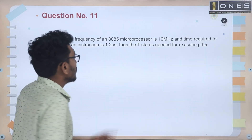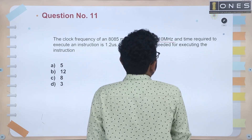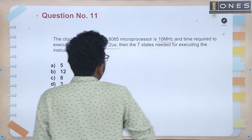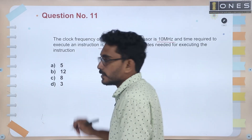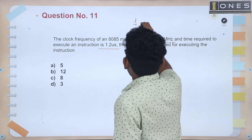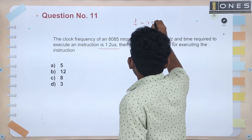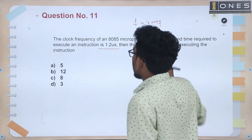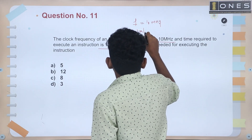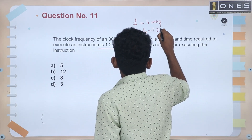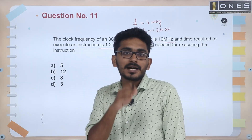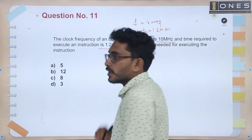The clock frequency of an 8085 microprocessor is 10 megahertz and the time required to execute an instruction is 1.2 microseconds. Find the T-states needed for executing the instruction.